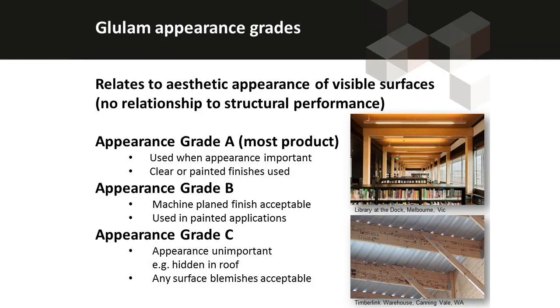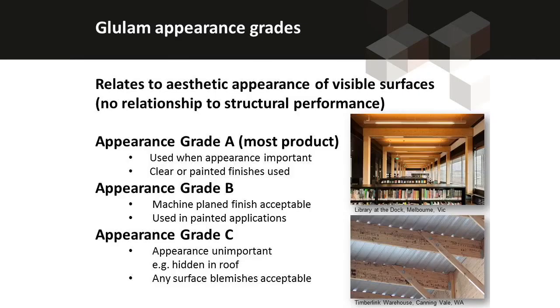Glulam can be manufactured to a number of different appearance grades. As well as the structural grades — which are in Australia the GL grades — there are also appearance grades that signify what surface finish is required. The highest appearance grade is A, and most product produced in Australia with an architectural use is appearance grade A, suitable for varnishing or a clear finish. Appearance grade C is a rough finish and is totally appropriate if the glulam is going to be hidden or used in an industrial application. The top photo shows appearance grade A and the bottom one is appearance grade C.